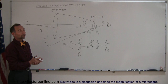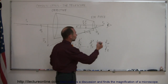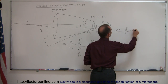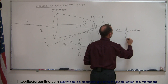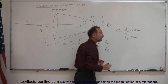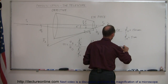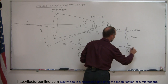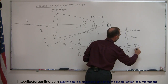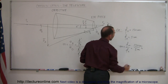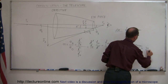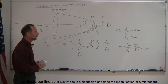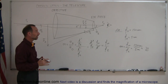For example, let's say the focal length of the objective is 150 centimeters and the focal length of the eyepiece is 5 centimeters. The magnification M is simply the ratio of the focal length of the objective divided by the focal length of the eyepiece: 150 centimeters divided by 5 centimeters, which equals 30. So that would be the magnification of this particular telescope.